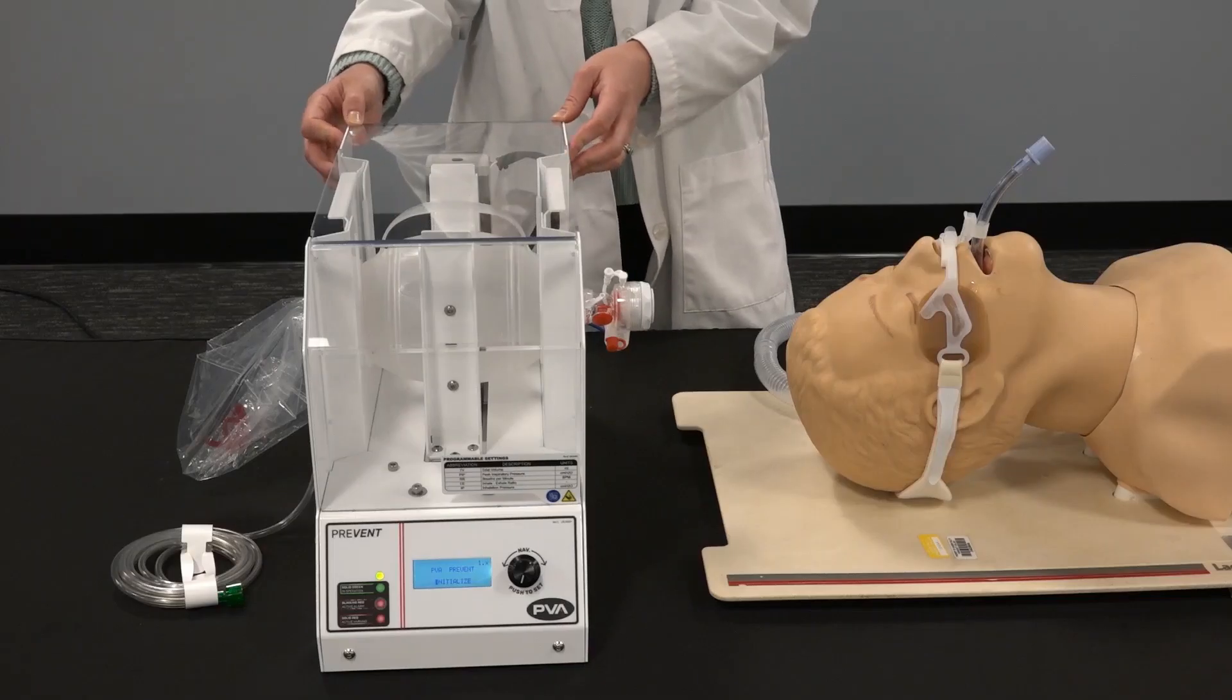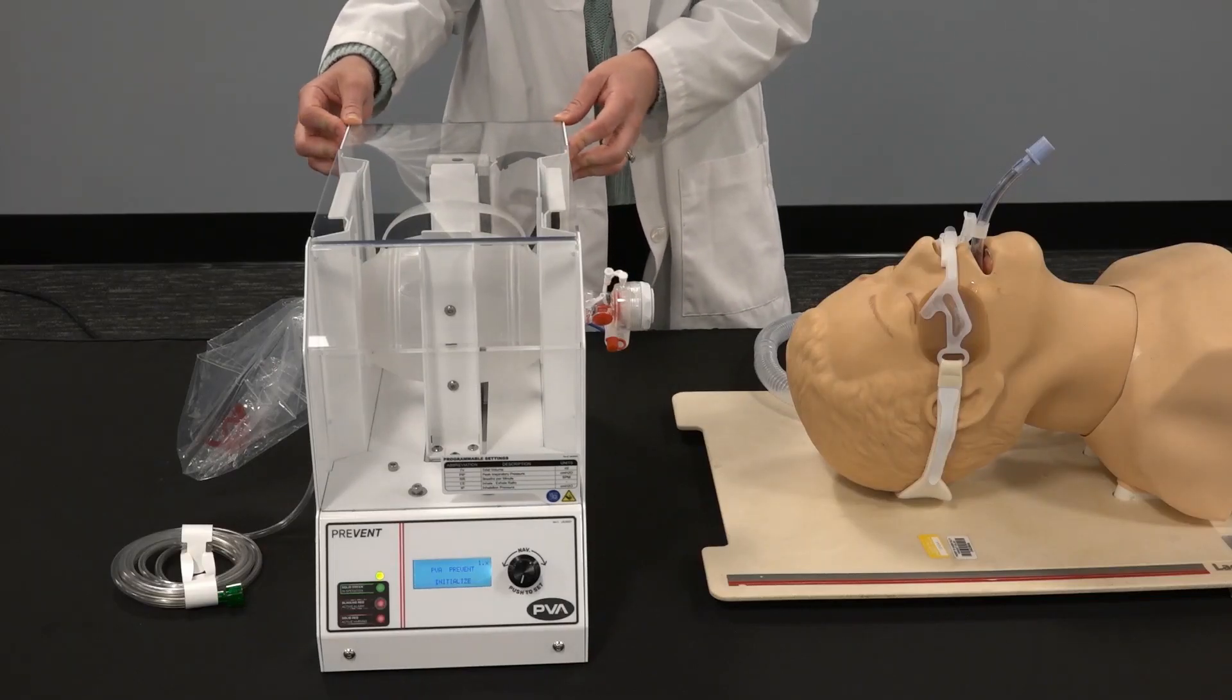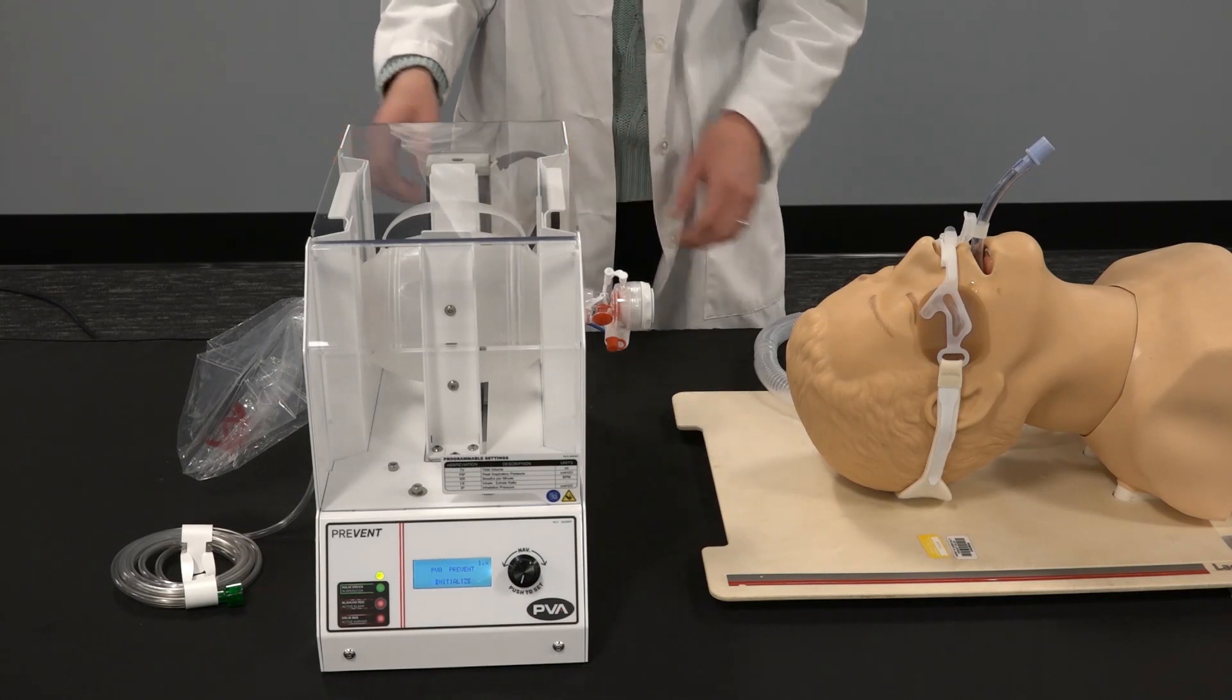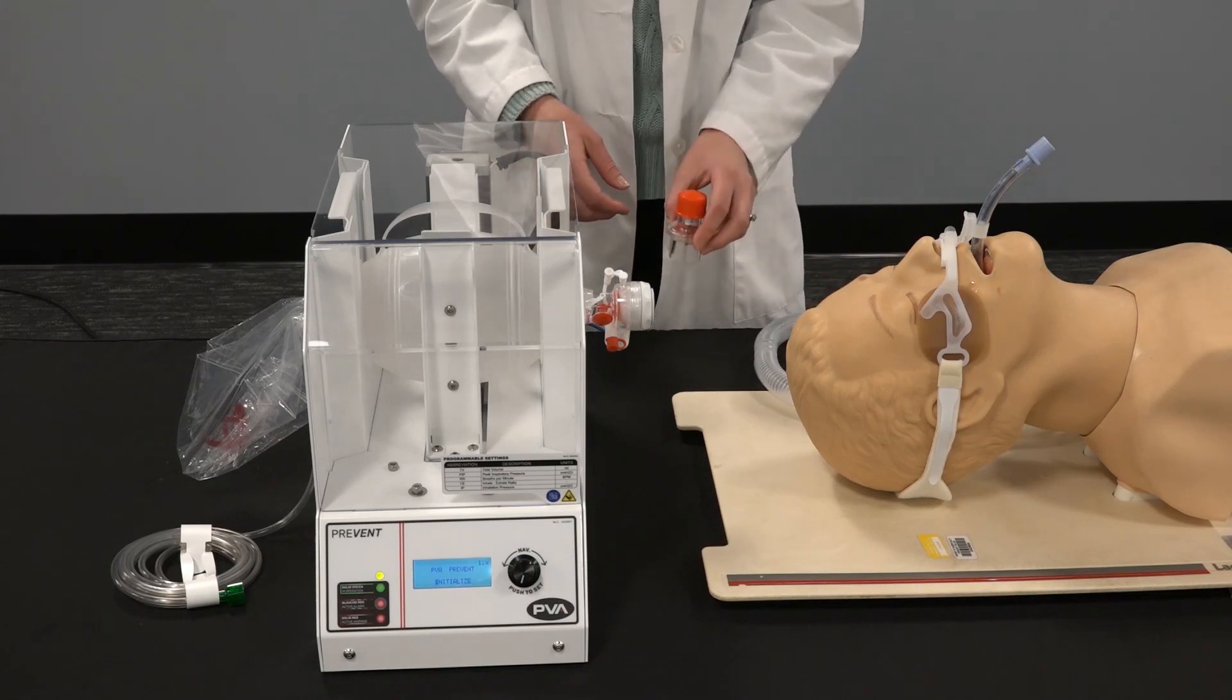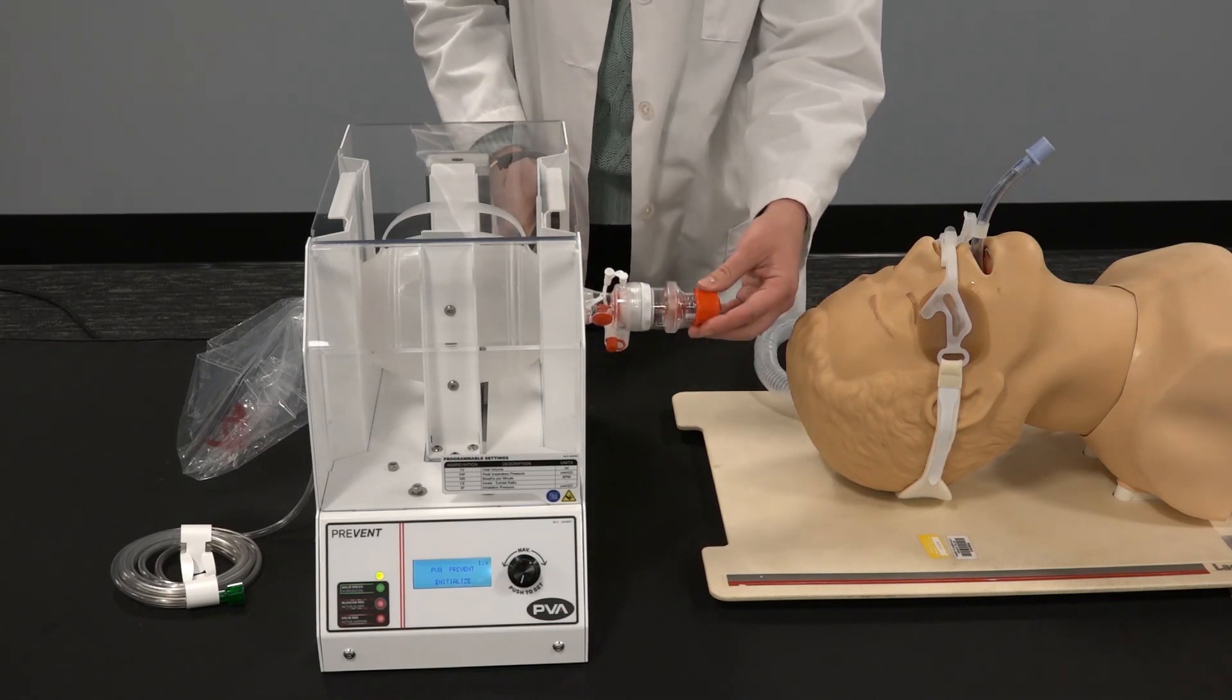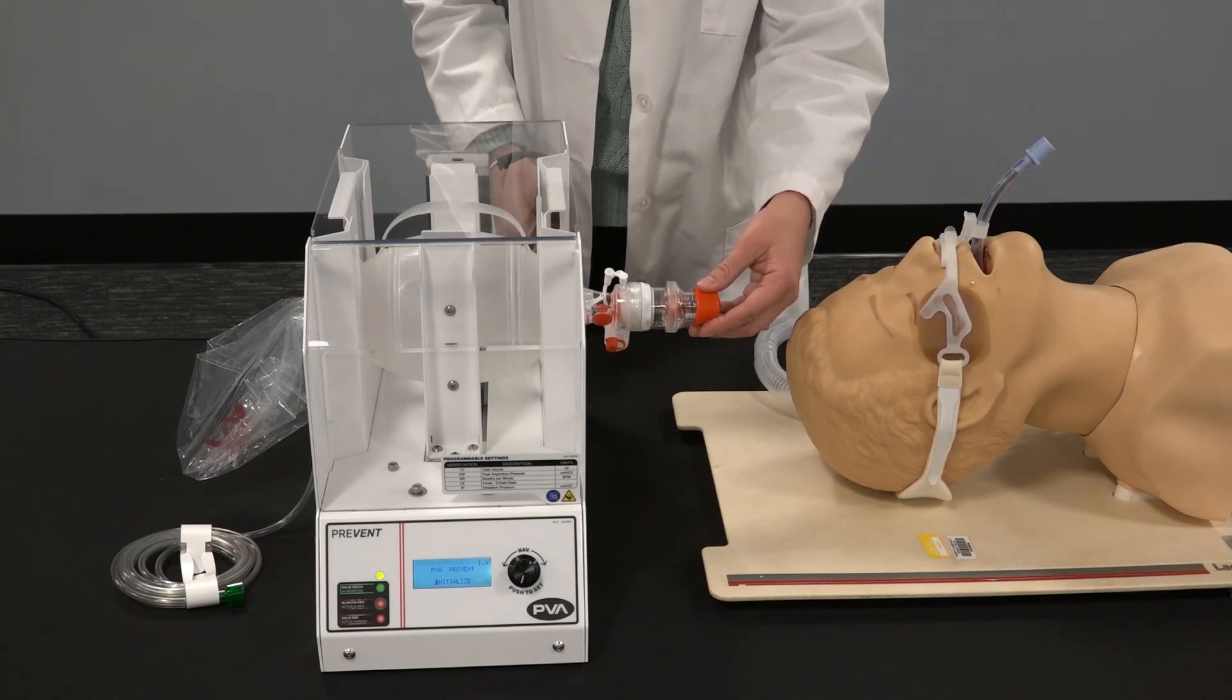Once the resuscitation bag has been installed and the power supply connected, you are ready to complete the rest of the breathing circuit. First, take the peep valve. Place the peep valve at the end of the resuscitation bag and set to your desired parameter.